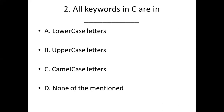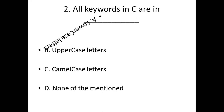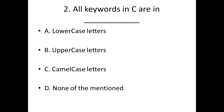Second bit: All keywords in C are in — Option A: lowercase letters. Option B: uppercase letters. Option C: camelcase letters. Option D: none of the mentioned. Answer: Option A, lowercase letters.